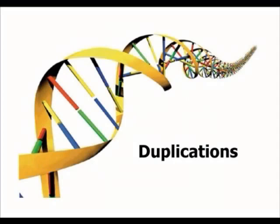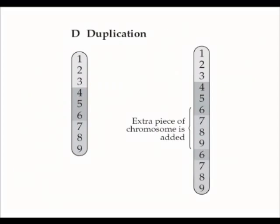Now let's look at the fourth and final rearrangement mutation that takes place in chromosomes, and that's duplication. As the name would suggest, it involves duplication of some genes or part of a chromosome — basically meaning it's repeated. In the diagram, you can see the normal chromosome on the left and the mutated chromosome on the right, where genes six, seven, eight, and nine are actually duplicated — they appear twice. There are many different genetic disorders caused by duplications, and Huntington's disease is one of them, caused by the triplet CAG being repeated up to 100 times. So there's our 10 minutes, and we'll leave it at that.